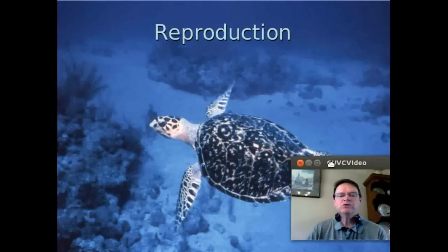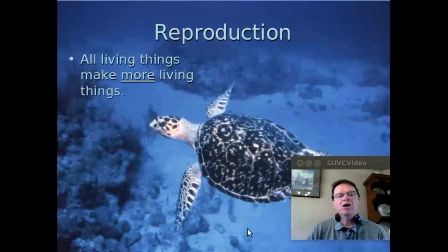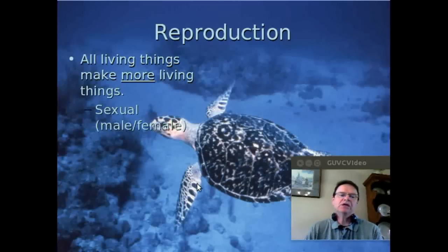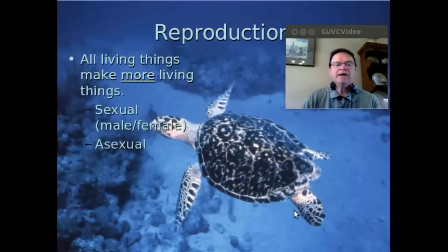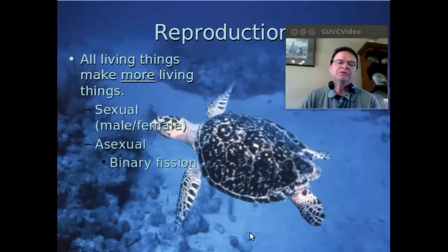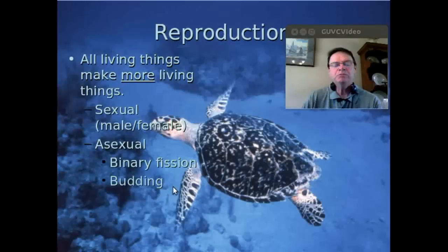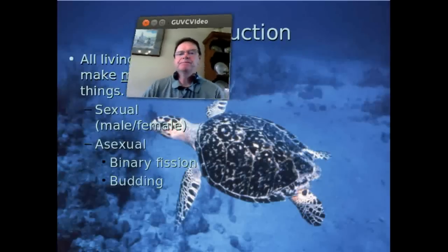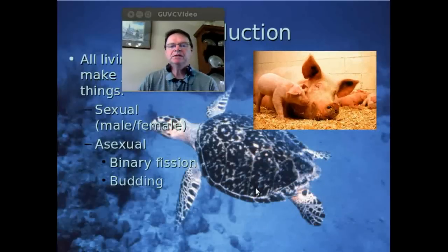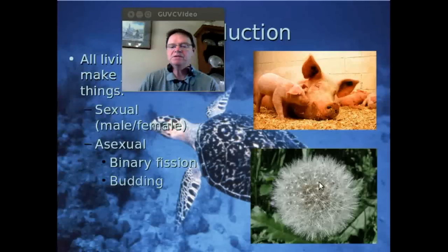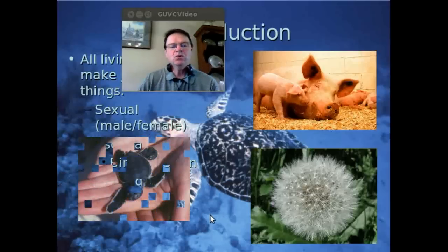Living things also reproduce, just like this sea turtle. They all make more living things, which is what reproduction is. They can do that sexually — males and females working together to reproduce — or asexually, as in the case of our bacteria. A couple of different ways they can do that: something known as binary fission, where an organism basically splits into two organisms, or something known as budding that you can see in yeast cells, where the new organism pinches off of the first. So we get little piglets, or dandelions from dandelion seeds that blow off, or a baby turtle.